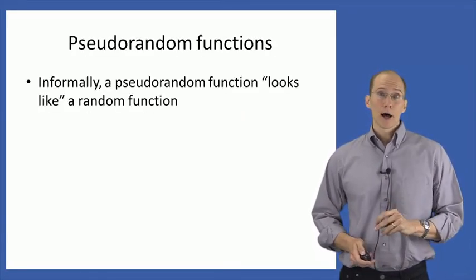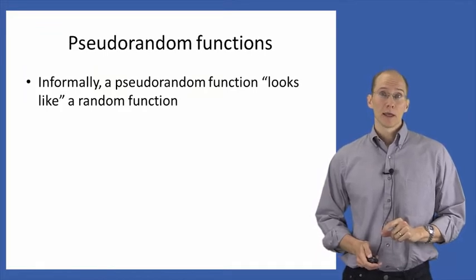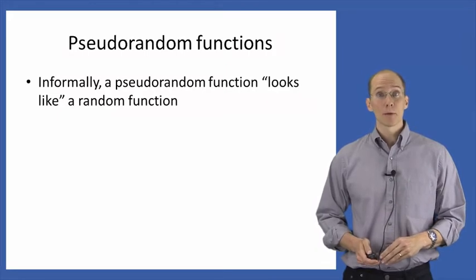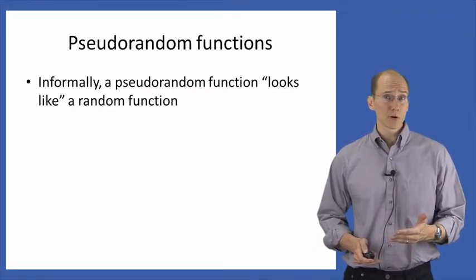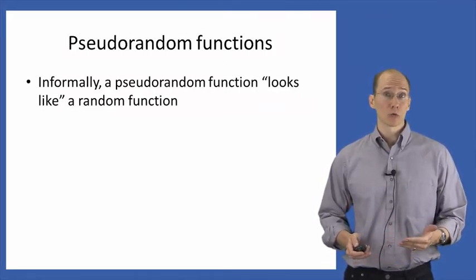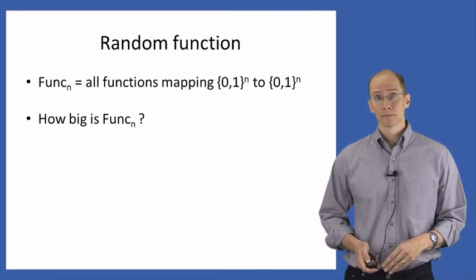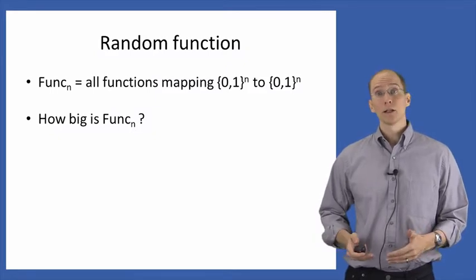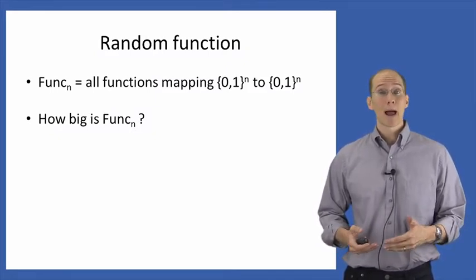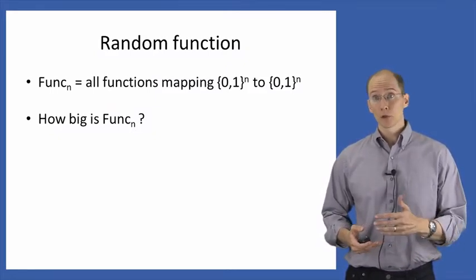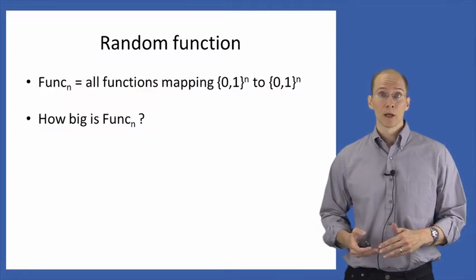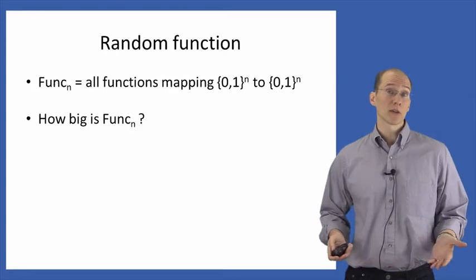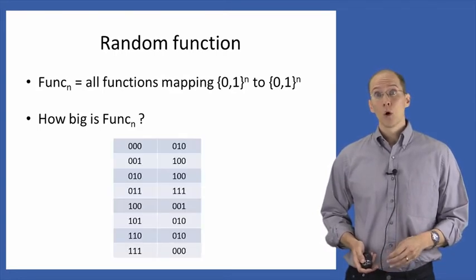Informally, a pseudorandom function is something that looks like a random function. So before we can talk more about pseudorandom functions, let's first make sure we understand something about random functions. Let's define func(n) to be a set containing all functions mapping strings of length n to strings of length n. The first thing we can ask is how big is this set — how big is func(n)?